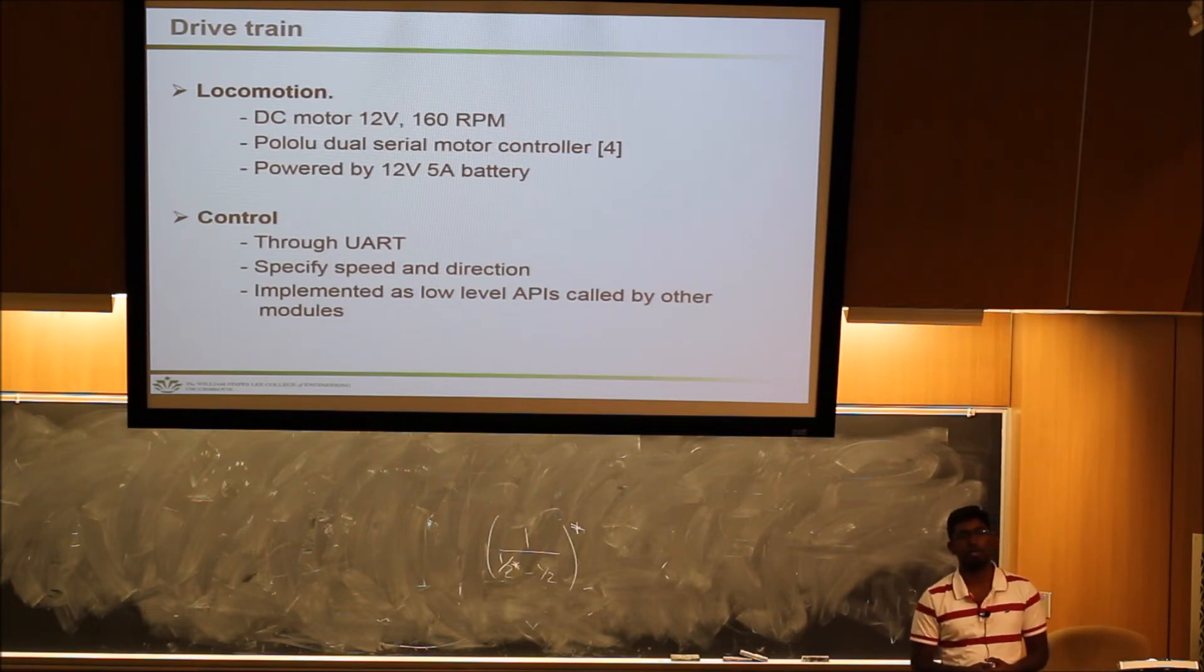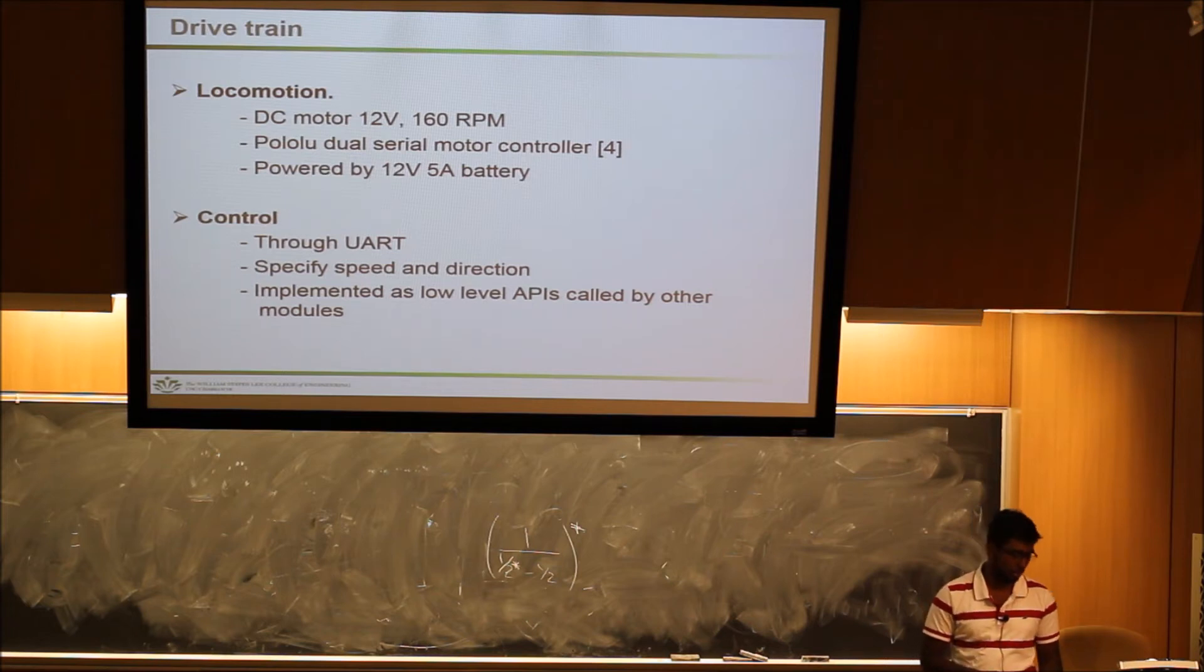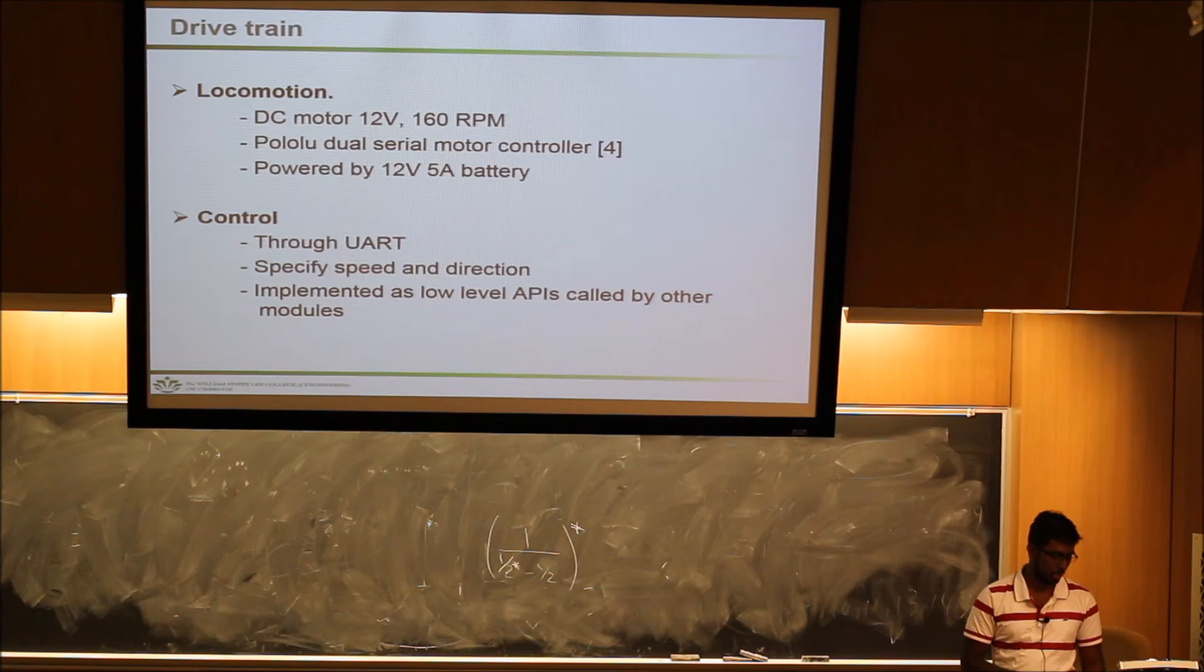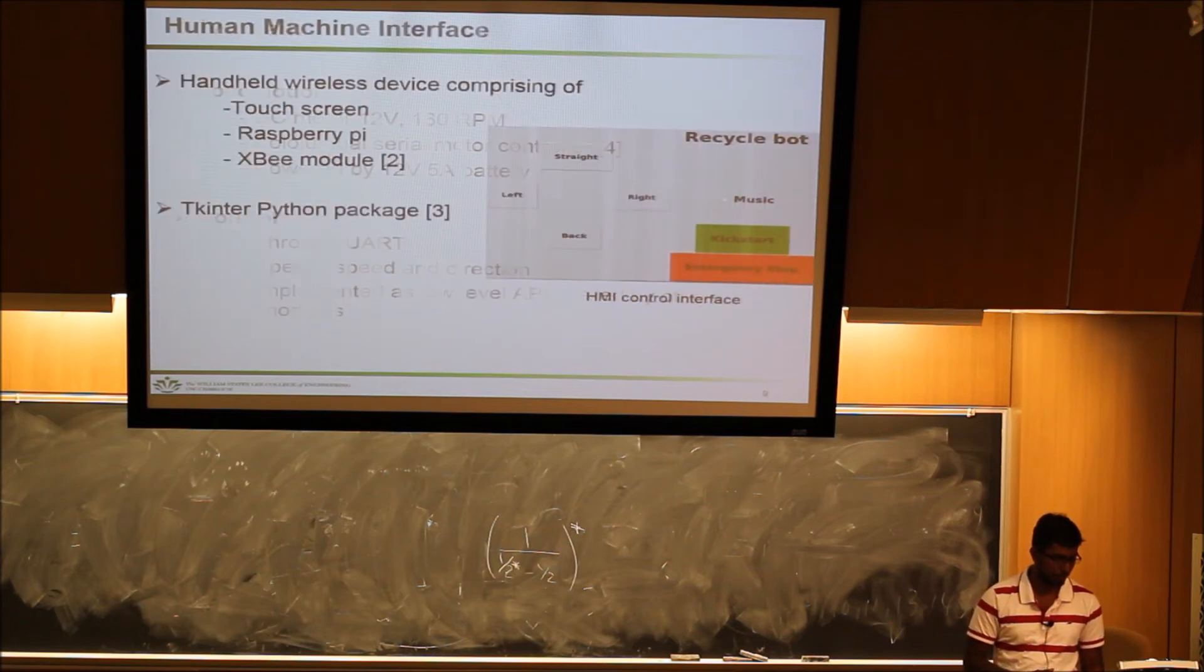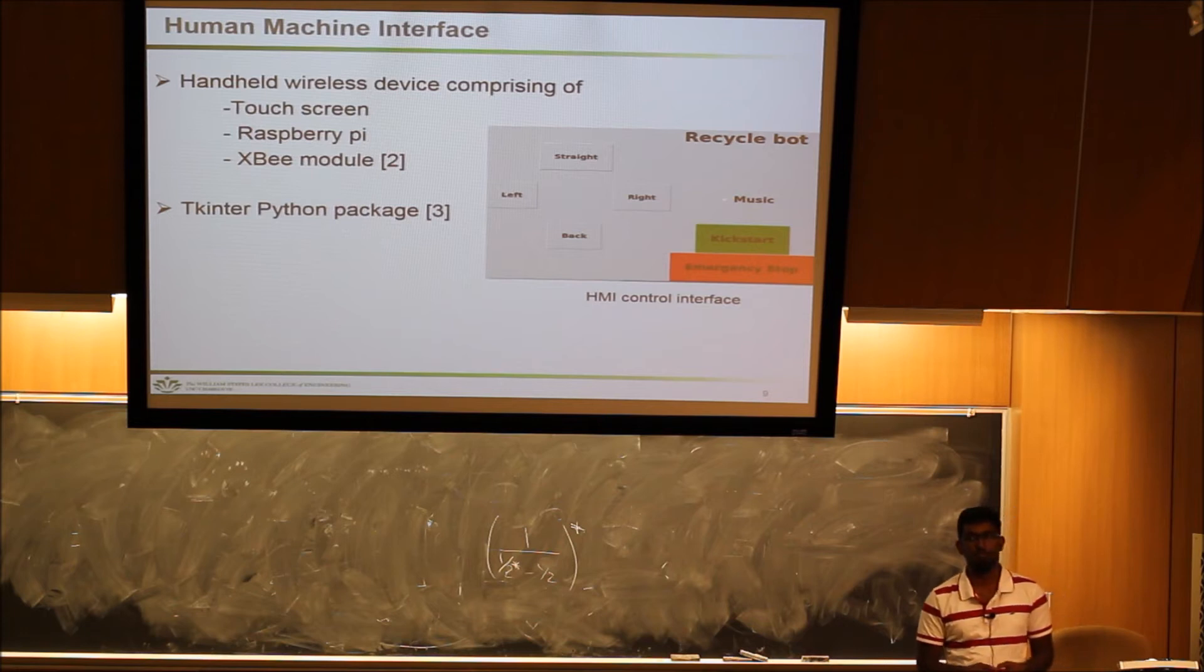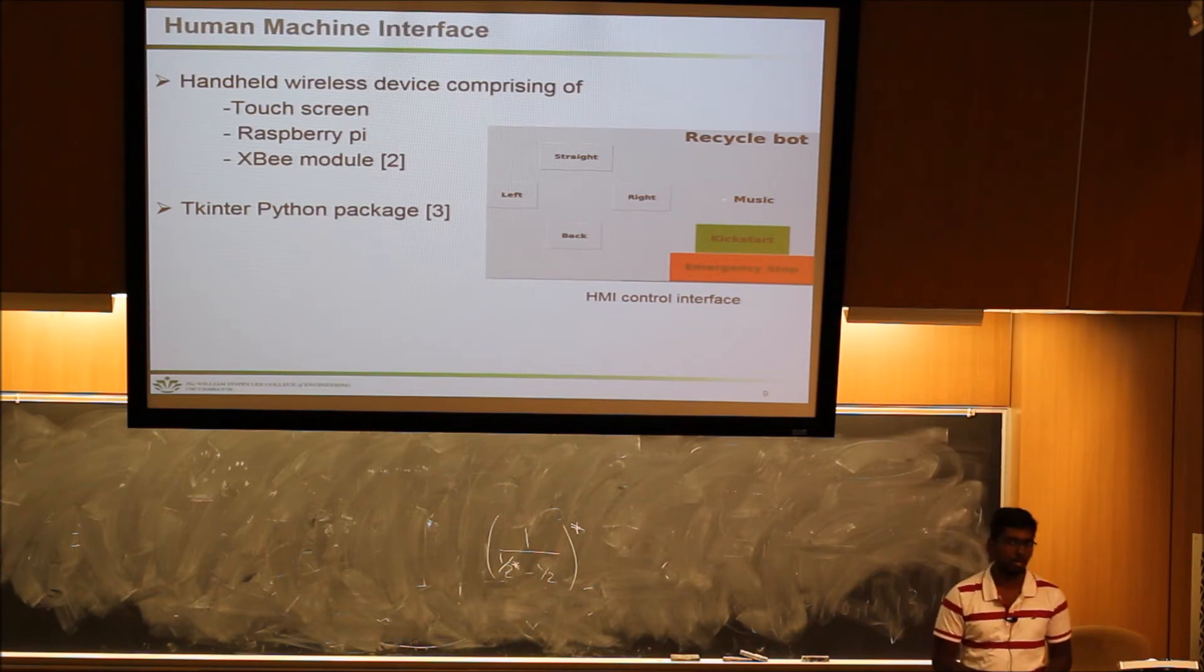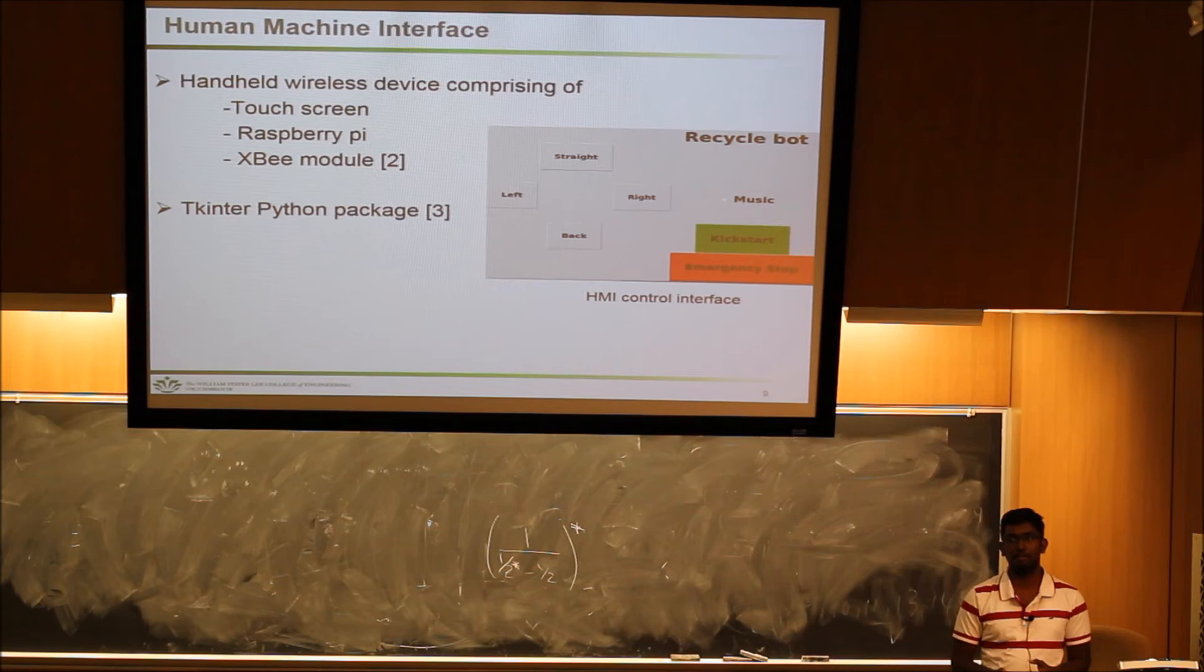It's entirely controlled by the human machine interface and sometimes for synchronization it coordinates with the image actuator control unit. The human machine interface is powered by the Raspberry Pi, it has a touchscreen interface, and you can control the direction of the navigation. It also has an emergency stop.